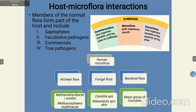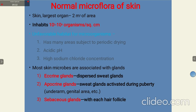Human microflora can be broadly categorized into archaeal flora, fungal flora, and bacterial flora. Among archaeal flora, there is Methanobrevibacter smithii and Methanosphaera stadtmanae. For fungal flora, there are Candida species and Malassezia species, the latter found on the skin. The major groups are the bacterial flora we have already seen.